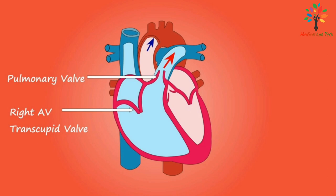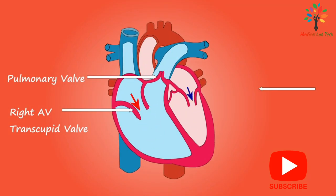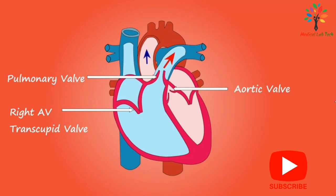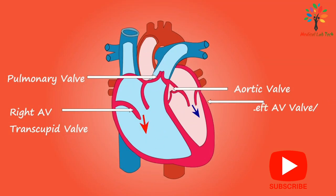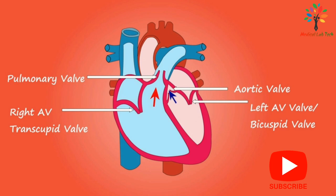It has three flaps or cusps, that's why it is known as the tricuspid valve. Next is the aortic valve, which is present at the opening of the aorta and prevents backflow of blood into the left ventricle. The last one is the bicuspid valve, which separates the left side of the heart into the left atrium above and the left ventricle below. It has two flaps or cusps, so it is known as the bicuspid valve.